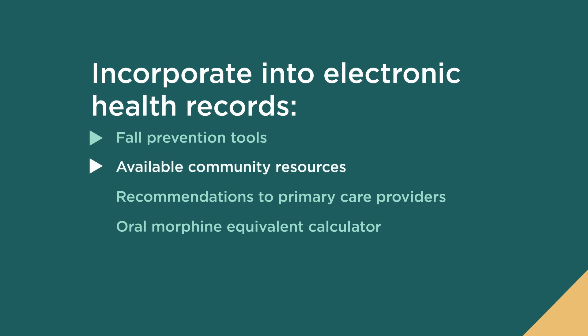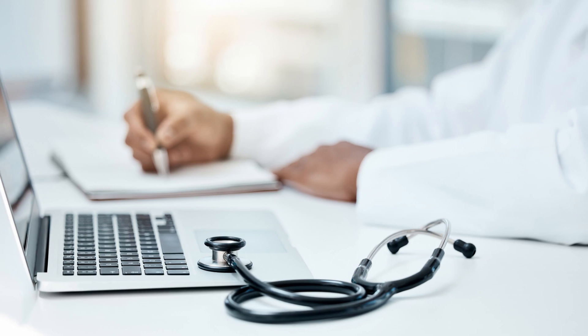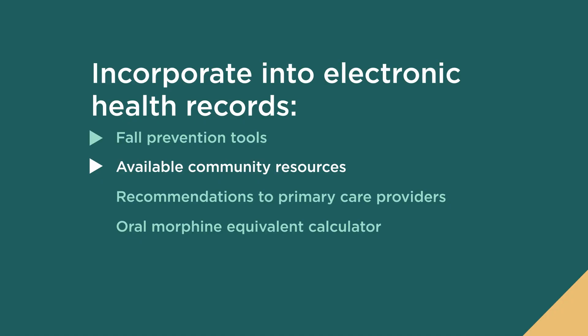Creating a list of community resources built into the electronic health record to include in a patient's discharge summary, such as physical and occupational therapists in their area and resources for local area agencies on aging. Including fall risk reduction recommendations in the discharge summary to primary care providers for continuation of care after hospital discharge. And incorporating the oral morphine equivalent calculator into the electronic health record to generate daily levels of opioid and other medicines for medication management.